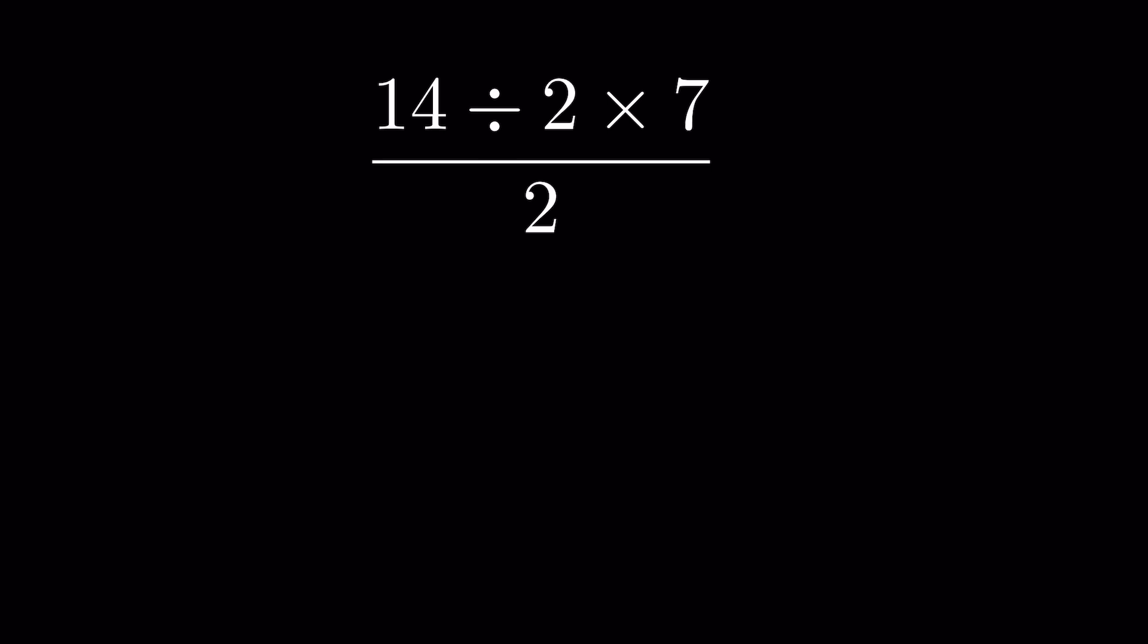Division is nothing but the reverse of multiplication. If you multiply a number 4 times 2, you can also write it as 4 divided by 1 upon 2. That means if you divide 4 divided by 2, it means 4 multiplied by 1 upon 2. So division and multiplication are called reciprocal actions, and they have equal priority.